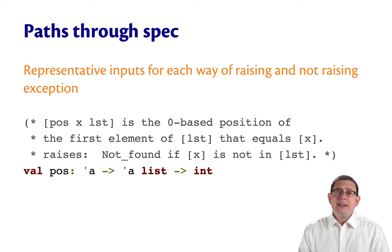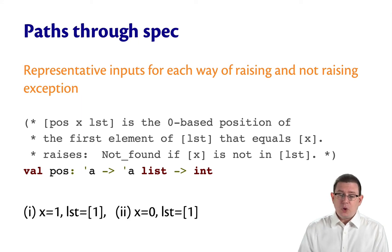Once more, many different inputs you could imagine testing here. But, for representative ways of raising or not raising that exception not found, we could create just two black box tests. One for when x is going to be found in the list, and one for when it's not.